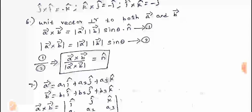Unit vector perpendicular to both A vector and B vector: from the definition, A cross B equals modulus of A times modulus of B times sin theta times n cap. Modulus of A cross B equals modulus of A times modulus of B times sin theta. Marking these as equations 1 and 2, dividing equation 1 by equation 2, we get n cap equals A vector cross B vector divided by modulus of A vector cross B vector.